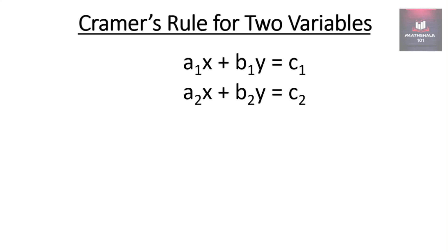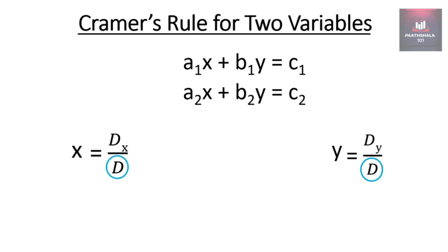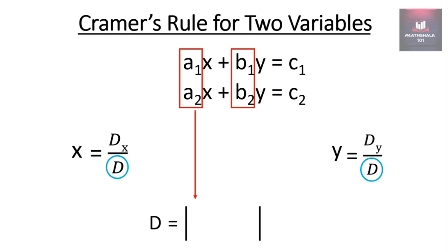To find the value of x: x = Dx/D, and y = Dy/D. Now let us understand how to find the value of D. D equals the determinant of the x-coefficients, that is a1 and a2, and the y-coefficients, that is b1 and b2.